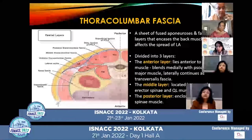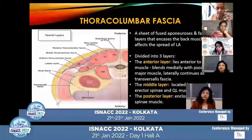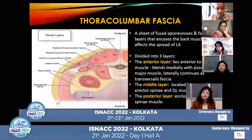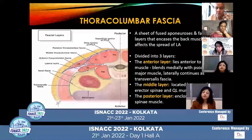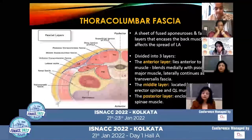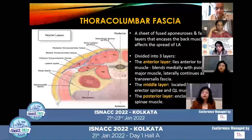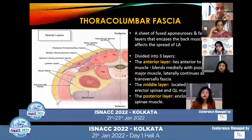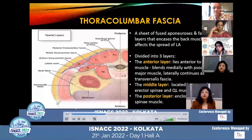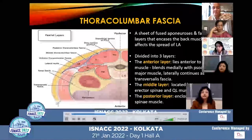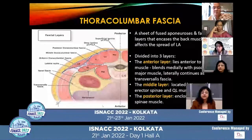The thoracolumbar fascia is a sheet of fused aponeurosis and fascia layers that encases the back muscles. It also affects the spread of local anesthetic. The thoracolumbar fascia can be divided into three layers. The anterior layer lies anterior to the quadratus lumborum muscle and blends medially with the psoas major muscle, while laterally it continues as the transversalis fascia. The medial layer is located between the erector spinae and quadratus lumborum muscle.